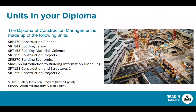Here are the eight core units you will study, and these are exactly the same eight units as the first year bachelor degree. Typically, the first four units studied in your first trimester are construction finance, building safety, building materials science, and construction projects one. Then in subsequent trimesters — either your second or third — you would study building economics, building information and modelling, construction and structures one, and construction projects two.